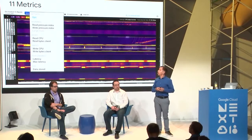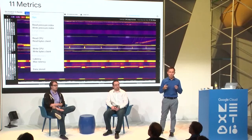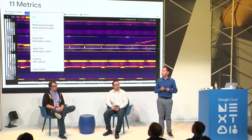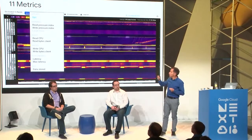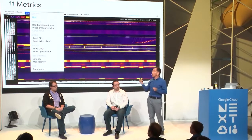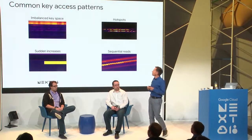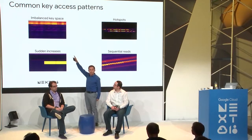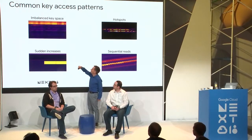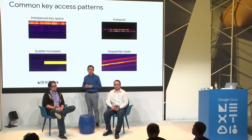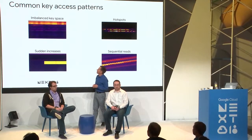Key Visualizer gives you 11 metrics. First is ops — the sum of reads and writes. Then three warning metrics that point to possibly bad performance. Then reads and writes. Performance metrics like latency. And finally the amount of data stored per row. For common access patterns: an imbalanced key space might show that about 20% of the top keys are glowing yellow and red while 80% at the bottom are barely used.